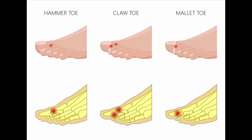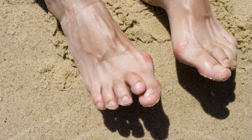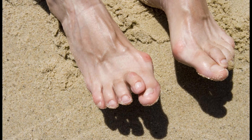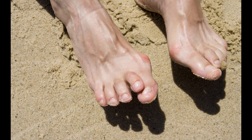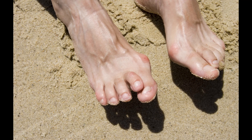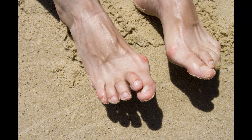Today we're going to be talking about hammer toes. A hammer toe is an abnormal bend at the proximal interphalangeal joint of the lesser digits. Today I'm going to be talking about the three main types of hammer toe deformities.